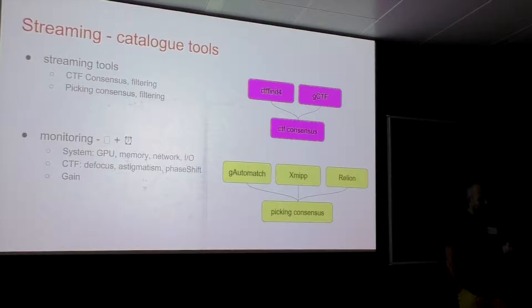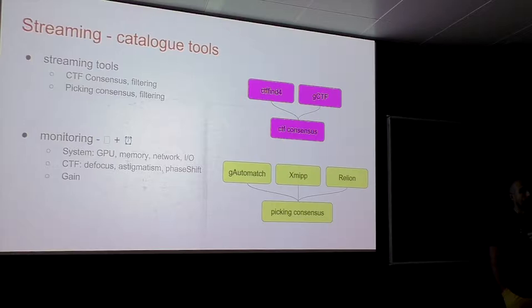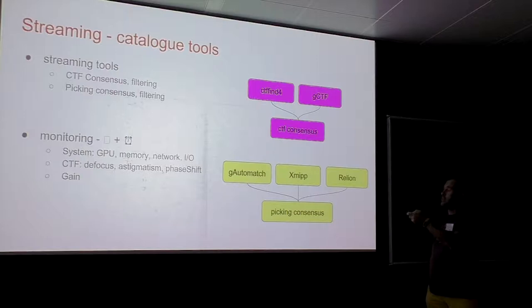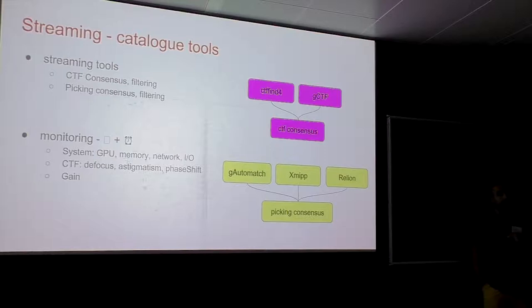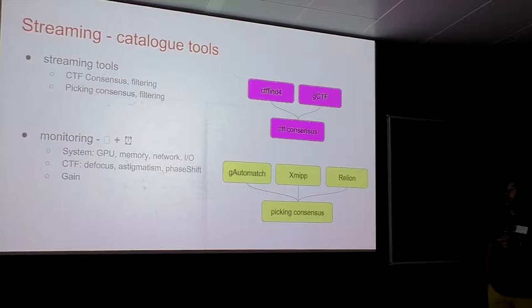Additionally, because you can have different CTF methods in your workflow, there are built-in tools in the software. Those include CTF consensus and filtering: if you run two CTF methods, they help you prune and decide and clean your CTF set. This consensus method can filter a CTF based on a threshold for resolution, astigmatism, or focus. It will also compare two different CTFs, and if they match up to a certain resolution, that CTF will pass as well.